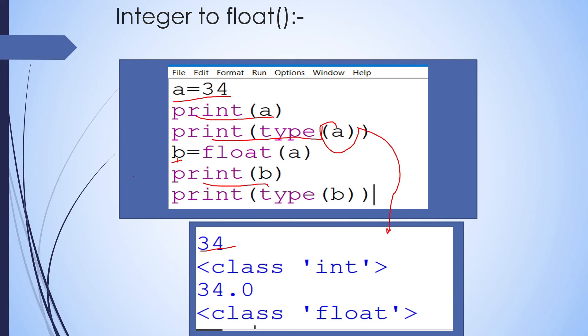We use the float function and store the result into variable b: b = float(a). Print b, then print type(b) to identify the type. The output is 34.0 — in float mode it adds a decimal with zero. The type of b is class float.